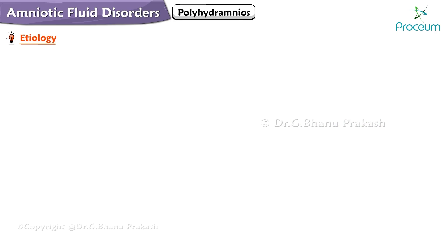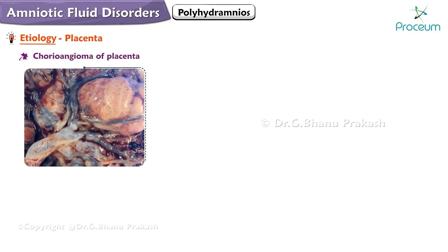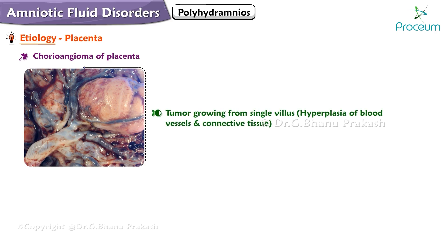Now for defects in the placenta. Chorioangioma of the placenta is a tumor growing from a single villus, consisting of hyperplasia of blood vessels and connective tissue, resulting in increased transudation.